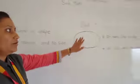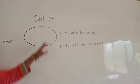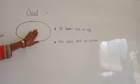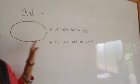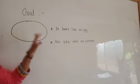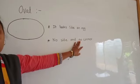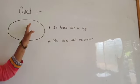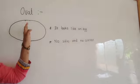Now, look at the oval. Oval looks like an egg and oval, also like a circle, has no sides and no corners. Means an oval does not have corners and sides.